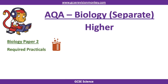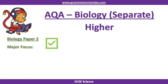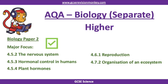They have told you the required practicals to focus on for this exam, and these are plant growth and organism distribution. Do have a look in the description because I'll put a link there to a video just focusing on these two required practicals. They've also told us the topics in the exam which will be a major focus: the nervous system, hormonal control in humans, plant hormones, reproduction and organisation of an ecosystem. The rest of this video focuses on the content for these major foci and will also remove anything that won't be assessed on the paper.